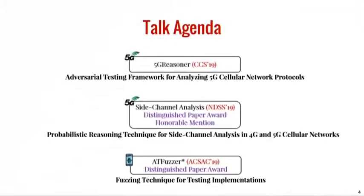Today's talk will mainly focus on the adversarial testing framework used for analyzing 4G and 5G cellular network protocols. Then I will talk about three novel side-channel attacks identified through a dedicated probabilistic reasoning technique. Finally, I will talk about a software fuzzing technique for verifying implementations when binary instrumentation is hard and code coverage information is missing.